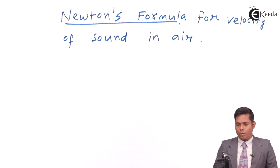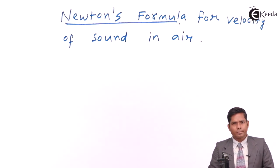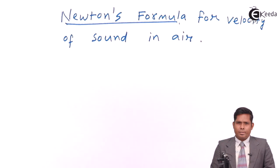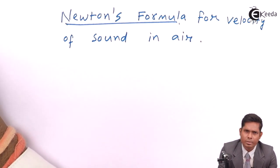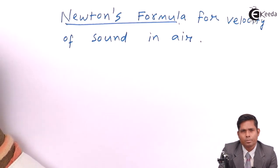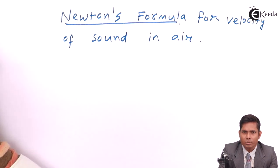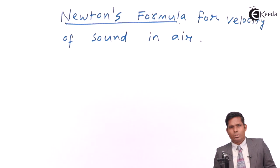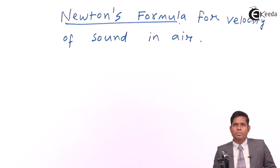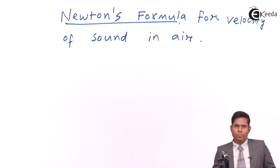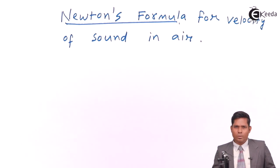Now, this is Newton's formula for speed of sound in air. When a body is set into vibrations, it produces a sound wave that propagates in the medium. Sound is longitudinal and requires a material medium for its propagation. Today we will see how fast it moves in air — Newton gave one formula, called Newton's formula for velocity of sound in air.